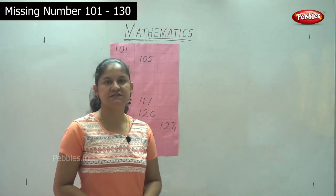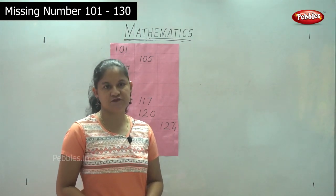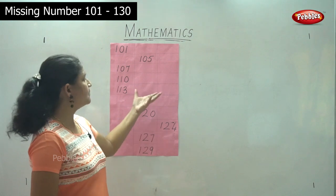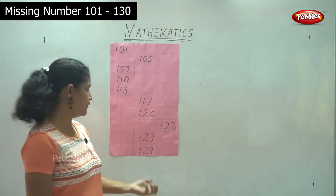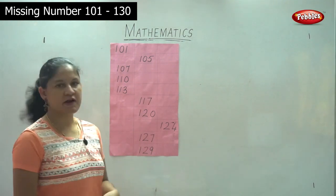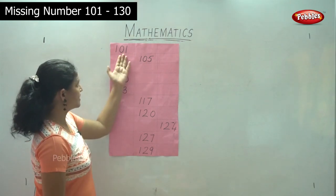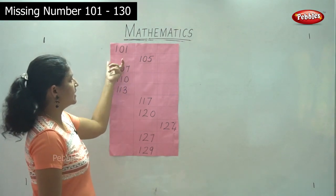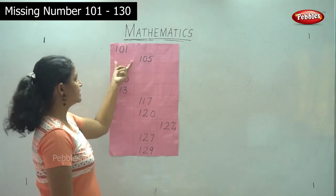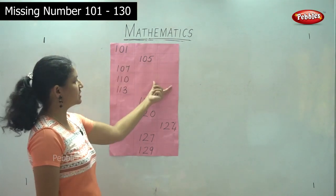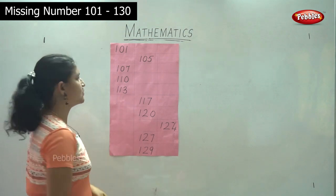Since we have learnt numbers till 150, now we will do missing numbers from 101 to 130. We have numbers starting at 101, and we are going to see what numbers will come in the blank spaces. So 101.